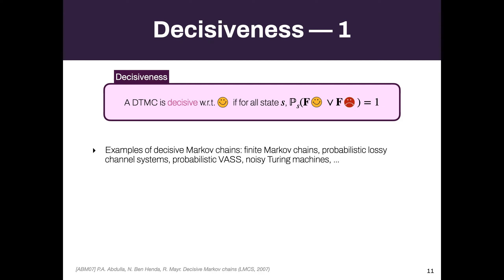Many Markov chains are decisive. The obvious class is finite Markov chains — they are always decisive. Other decisive classes include probabilistic lossy channel systems, probabilistic vector addition systems (Petri nets), and noisy Turing machines. The counter-example is the unbalanced random walk, which is not decisive.